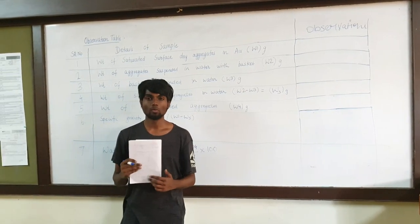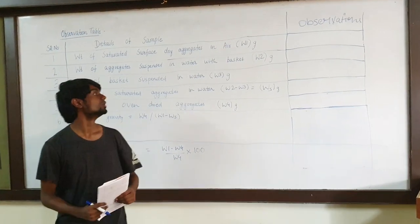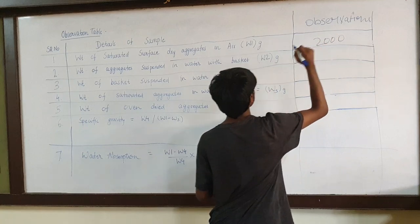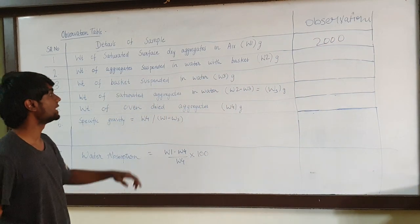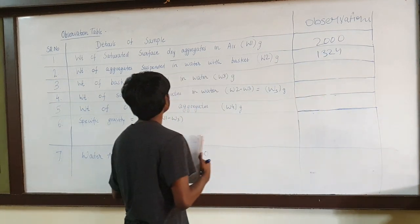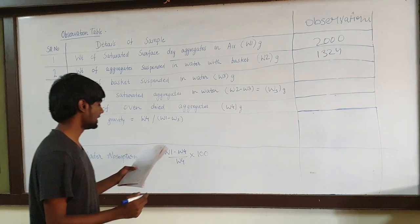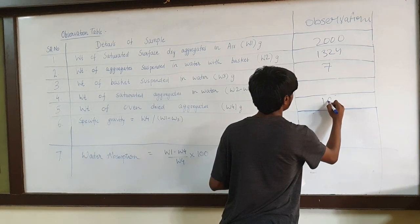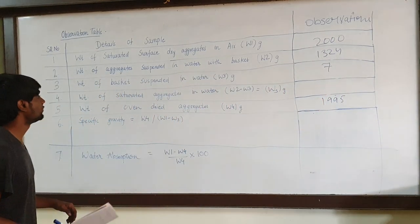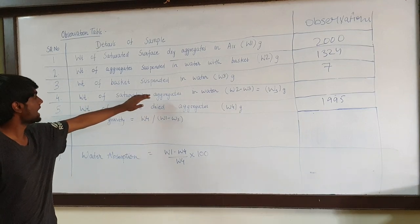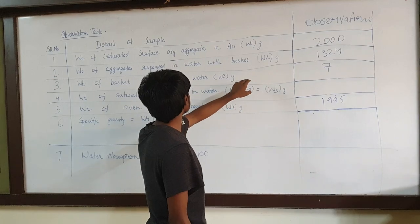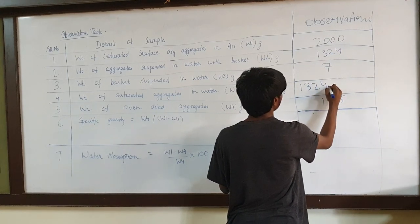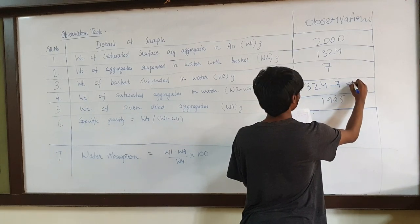After performing the experiment, we have got the values of W1, W2, W3, and W4. W1 represents the weight of saturated surface-dry aggregates in air, whose value is 2000 grams. W2 represents the weight of aggregates suspended in water with the basket, whose value is 1324 grams. W3, which represents the weight of the basket suspended in water, is 7 grams. W4 represents the weight of oven-dried aggregates and its value is 1995 grams. Now we find Ws, the weight of saturated aggregates in water, by calculating W2 minus W3, which is 1324 minus 7, giving 1317 grams.